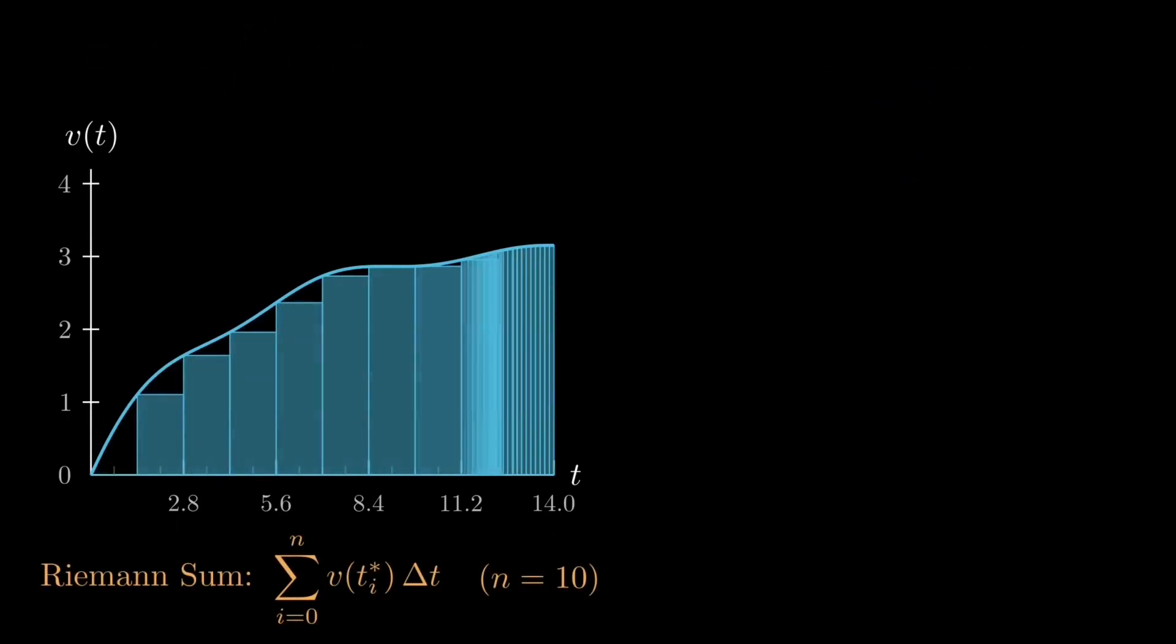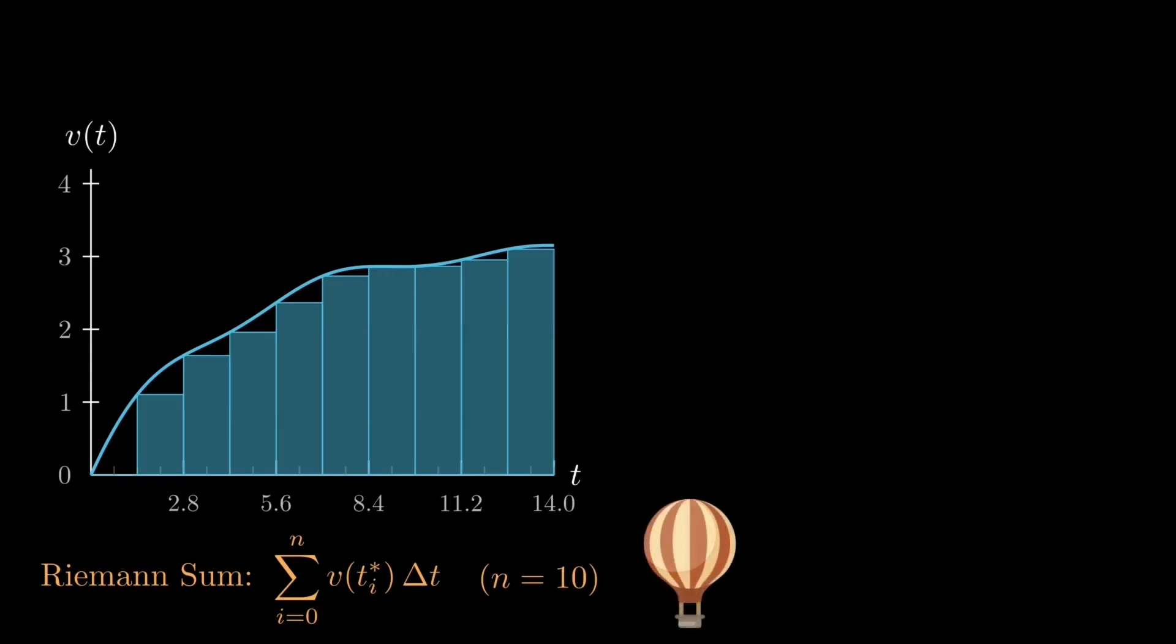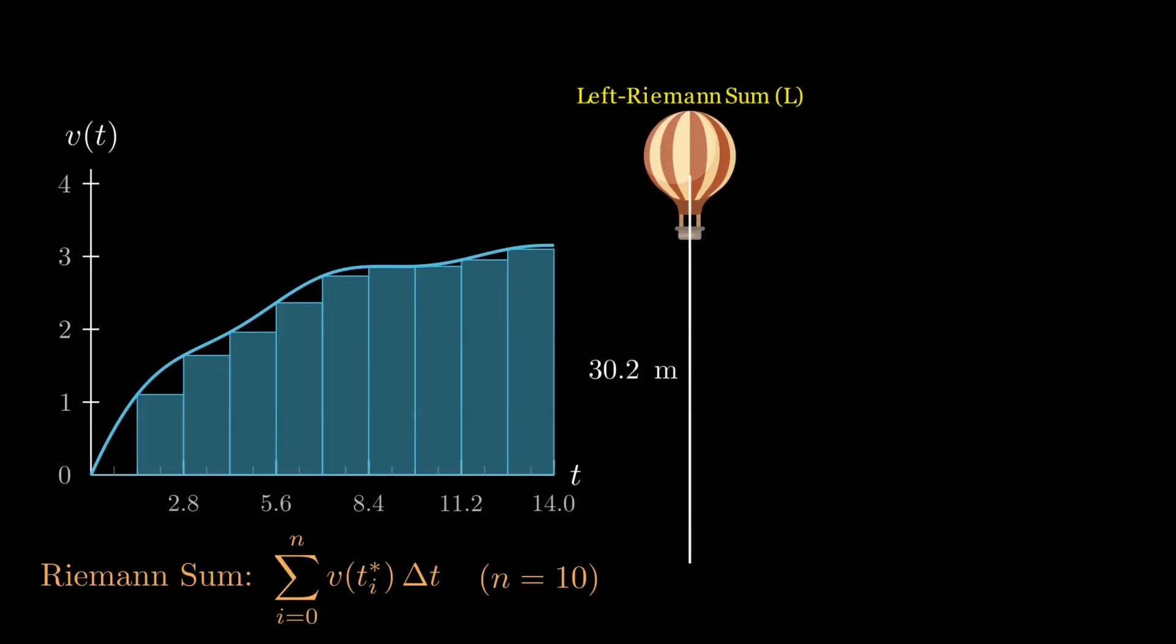Now, let's compare the left endpoint and right endpoint sums directly. For an increasing function like this velocity curve, the left Riemann sum underestimates the total height. Each rectangle misses the top of the curve, so the sum is too small.